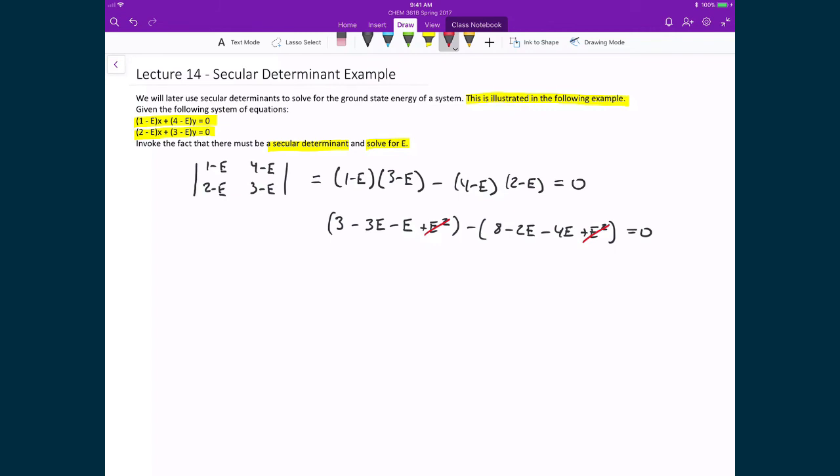I have 3 minus 8, giving minus 5. I have minus 3e minus e which is minus 4e, and from that I add 6e, leaving plus 2e. That's all equal to 0. Solving for e, I find e equals 5 over 2.